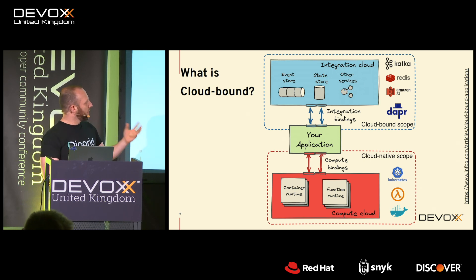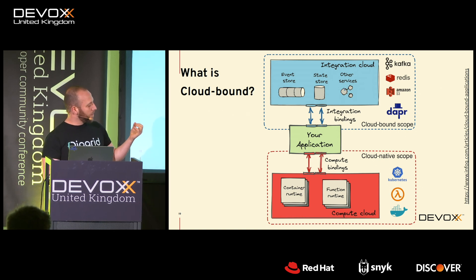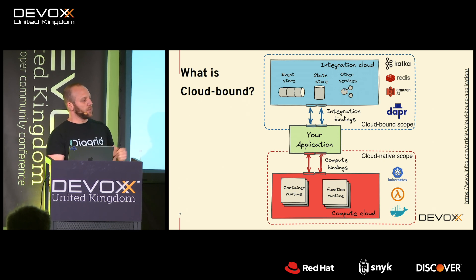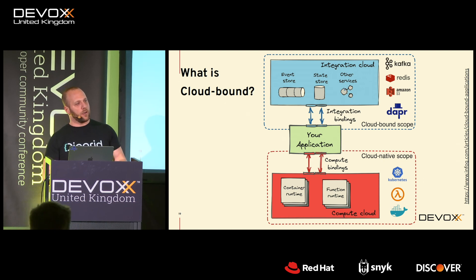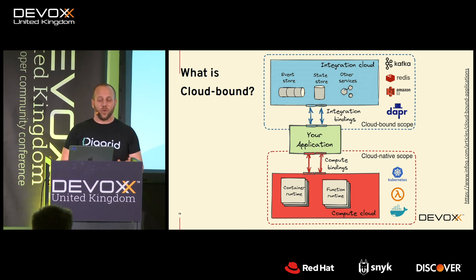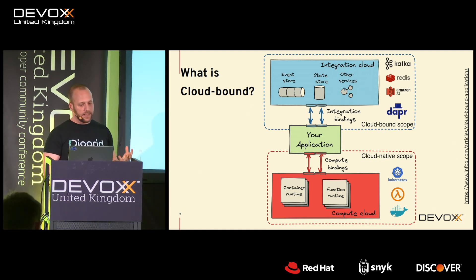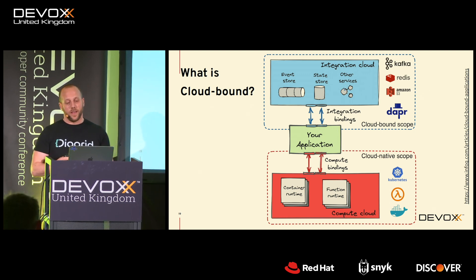If we have an application in a container, it needs to run on top of some kind of compute infrastructure — whether that's a container service, a Kubernetes service, or a function based on Lambda or Knative. There are certain contracts between the application and the compute layer: how health checks are done, how you define configuration, how you request compute from the platform. These are all compute bindings, and cloud-native scope is primarily centered around that. But an application also needs other things — messaging, an eventing store, storage such as a database or key-value store, and communication with other services. These are what I call integration bindings.